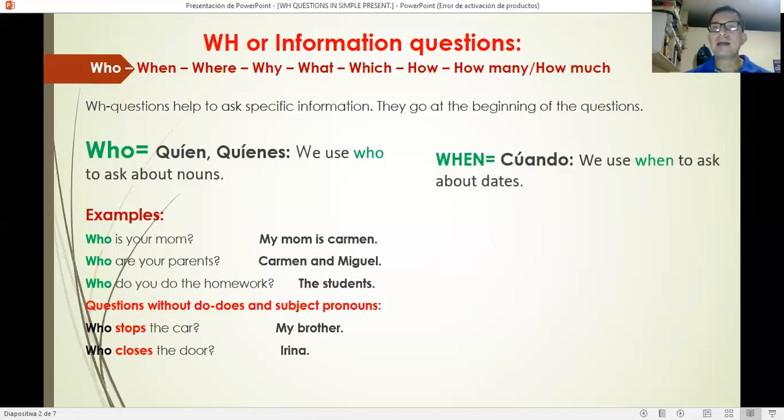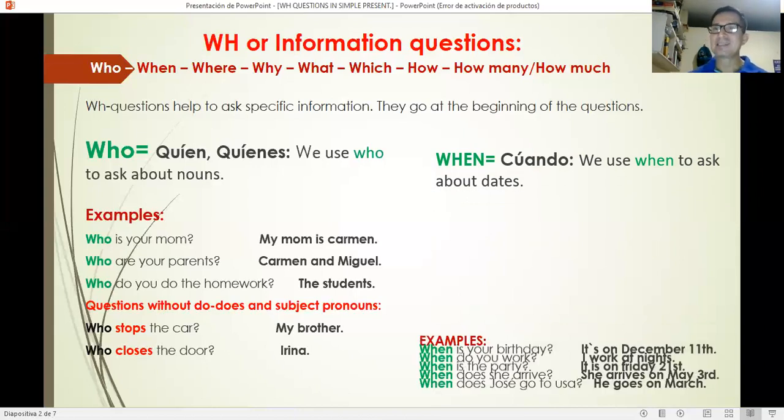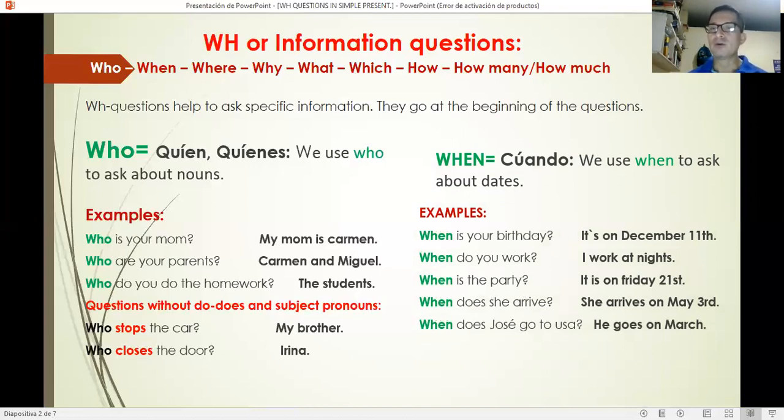WHEN means cuando. We use when to ask about dates. Examples: When is your birthday? It's in December 11th. When do you work? I work at nights. When is the party? It is on Friday 21st. When does she arrive? She arrives on May. When does José go to USA? He goes on March.